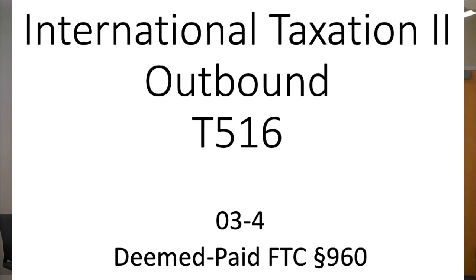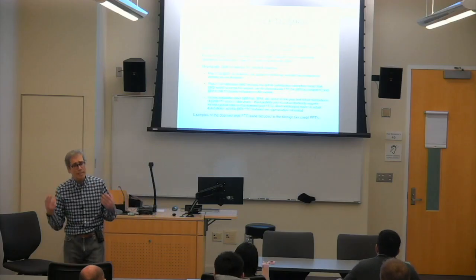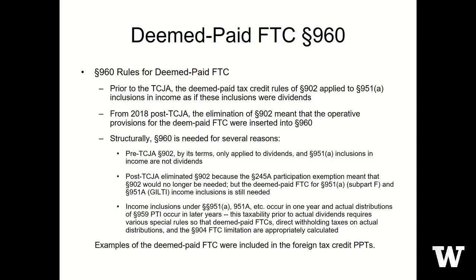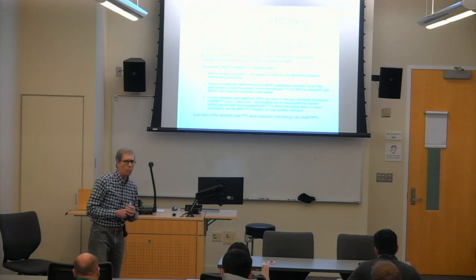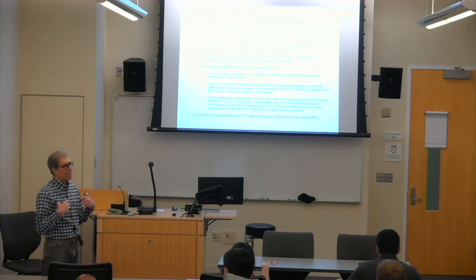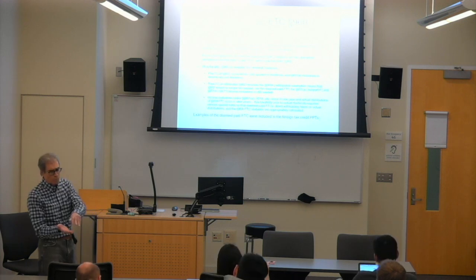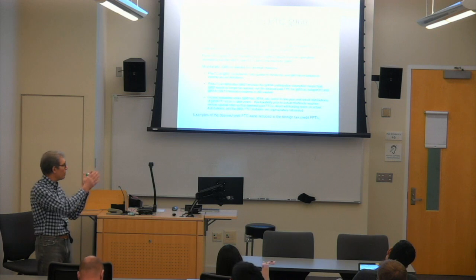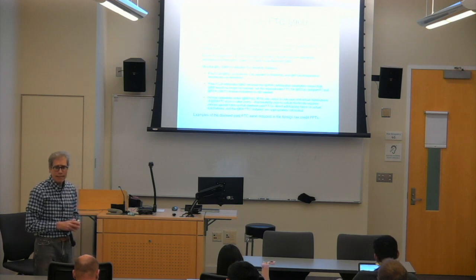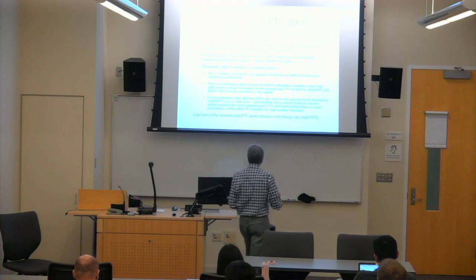Okay, now we want to go specifically to the section within subpart F which speaks about the deemed paid credit that we've been talking about. There's nothing different here than what we have talked about, but I think maybe drawing one picture would be useful. The idea is foreign taxes that are paid by a CFC, which ones get up to the US parent or US shareholder through this mechanism? So let me attempt to draw something out.